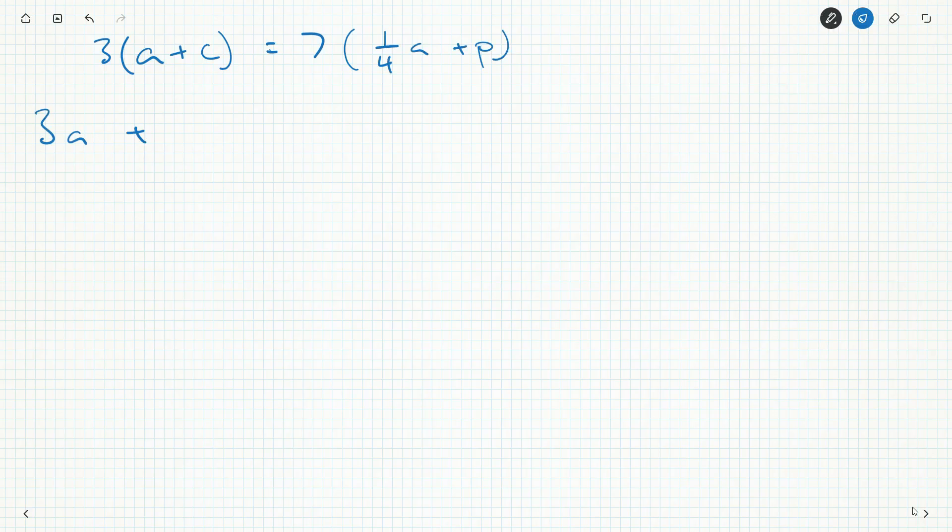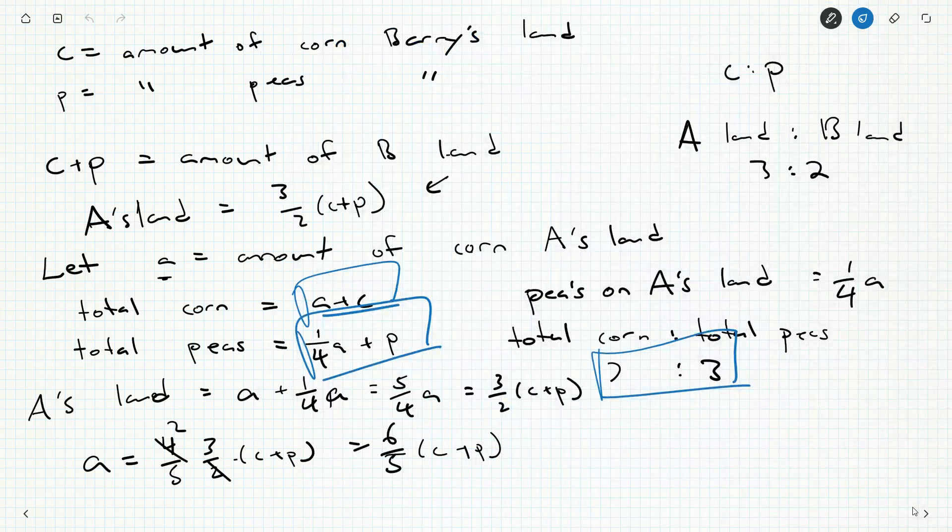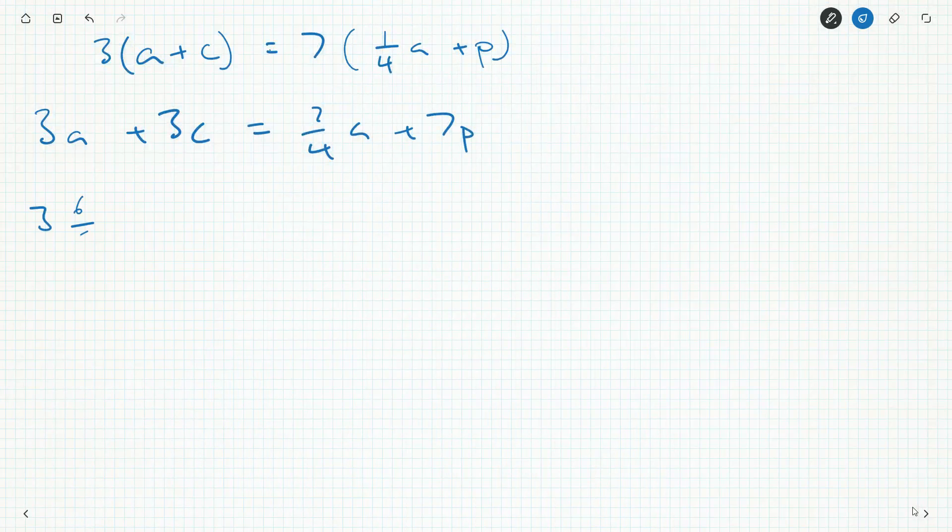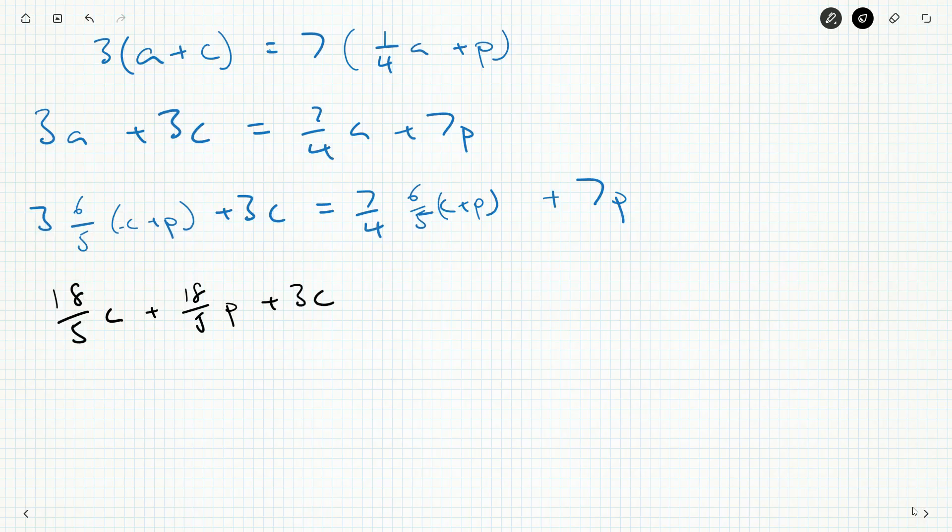But I know what A is. So we'll do three A plus three C is seven fourths A plus seven P. And now if we go back a page, it's six fifths C plus P. I can replace every instance of A with that. Now there will be some expanding and simplifying. Let's go back to black here. So that'll be 18 fifths C plus 18 fifths P plus three C is the same as 42 twentieths C plus 42 twentieths P plus seven P.